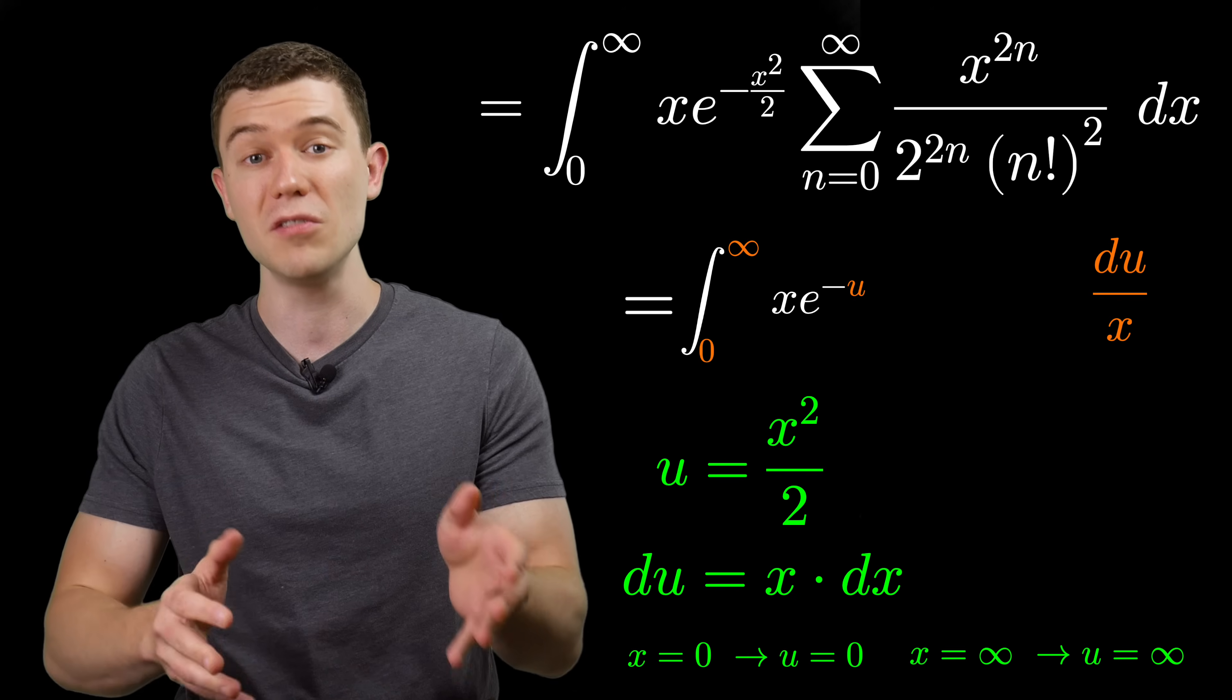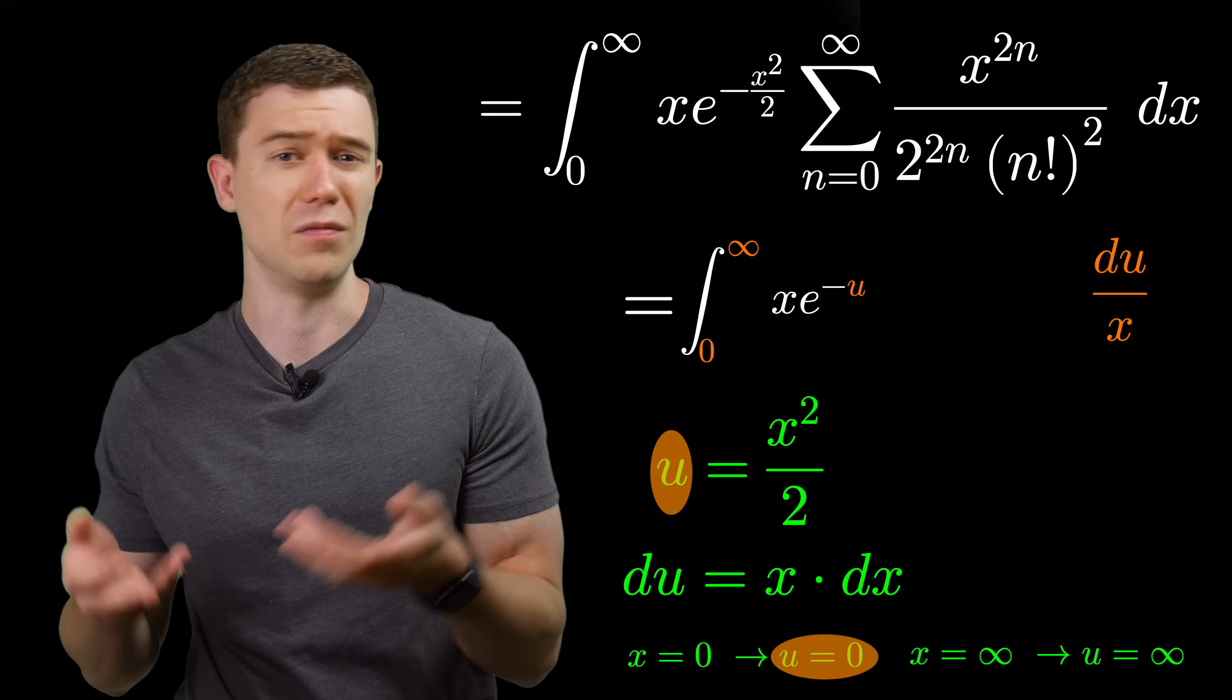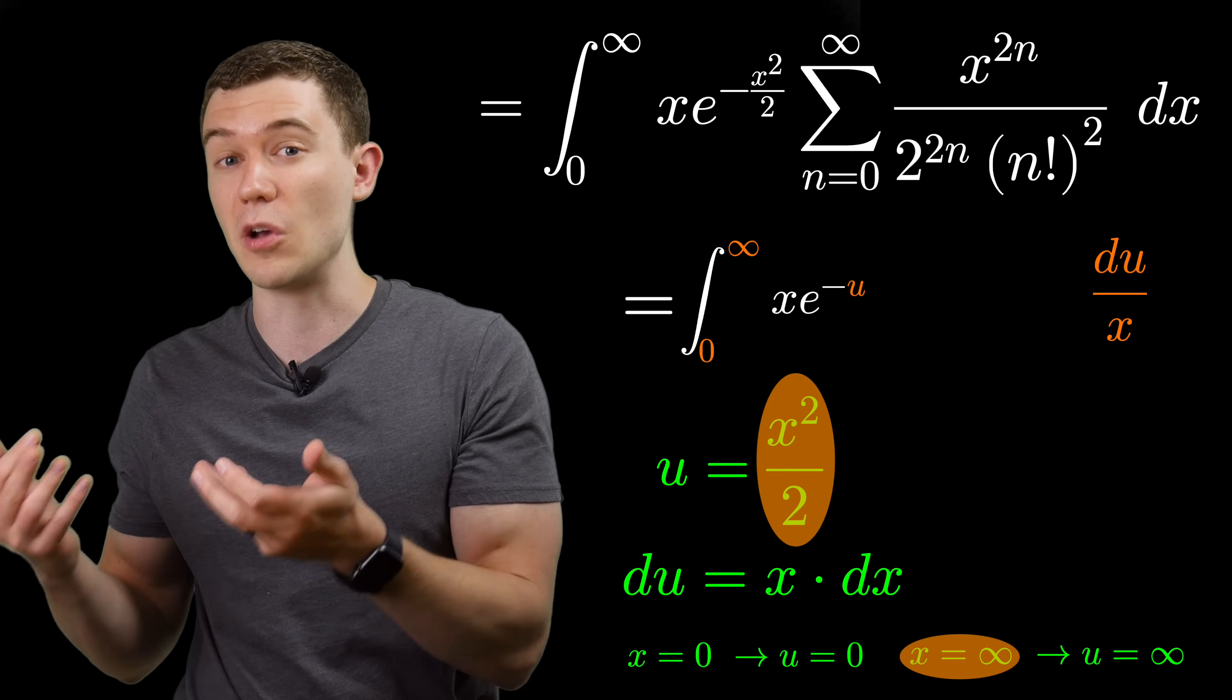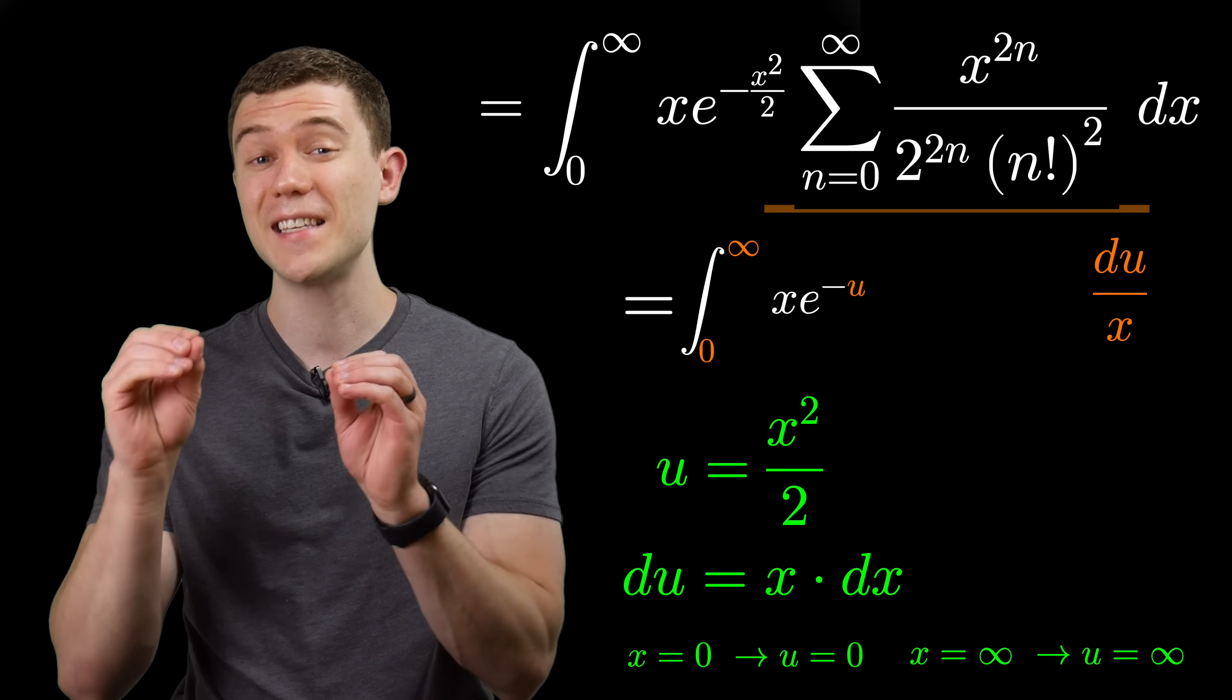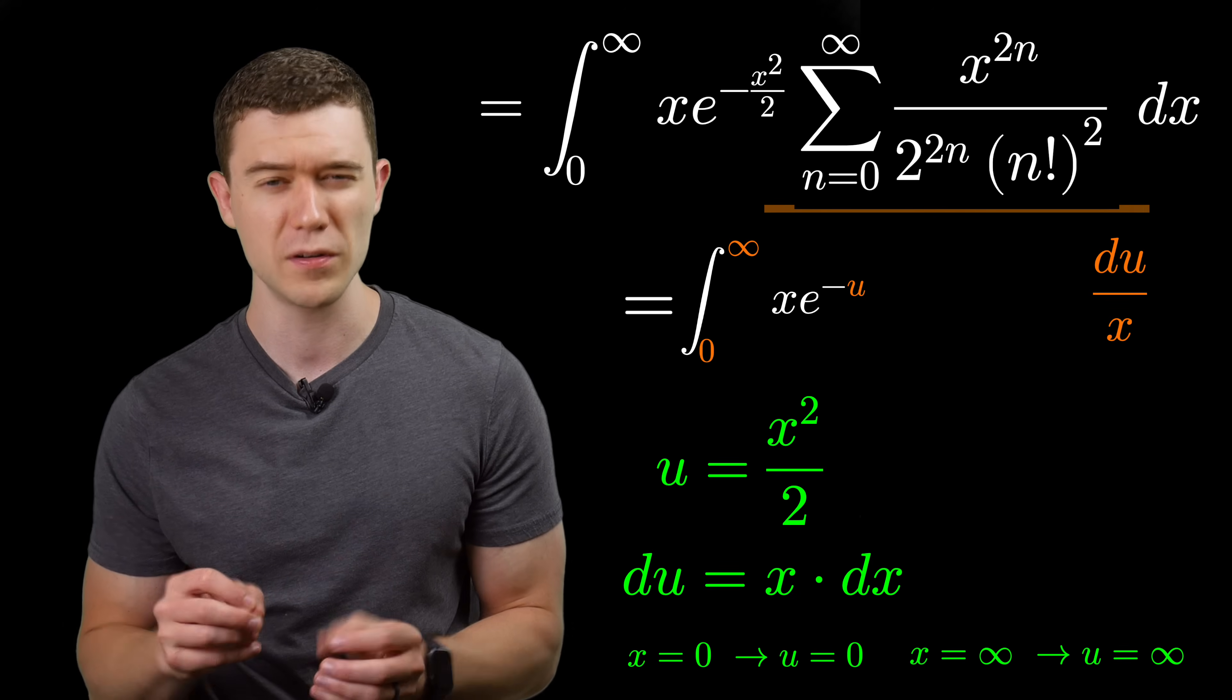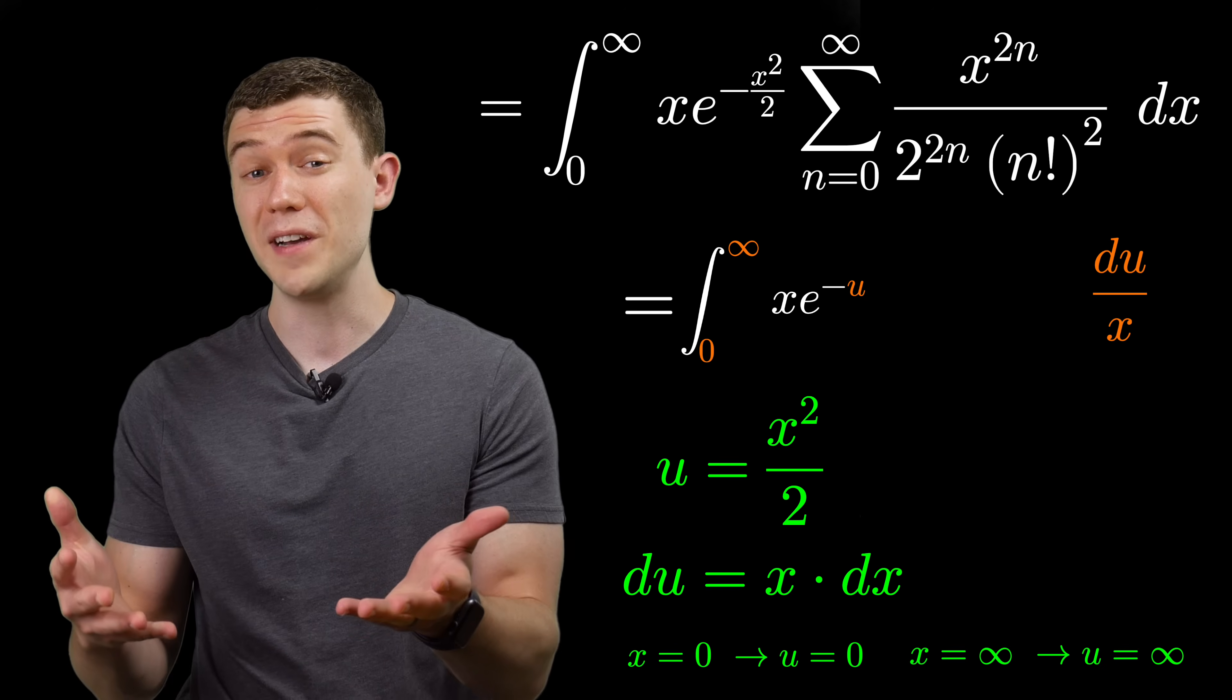When we substitute 0 for x in our substitution, we get 0 for u, and we can't necessarily plug in infinity, but if we let x go towards infinity, then u would also go towards infinity in our substitution. Now, thanks to that second infinite sum, we still have some x's lingering about. We'll have to change those to u if we want to integrate this. You might call this back substitution.